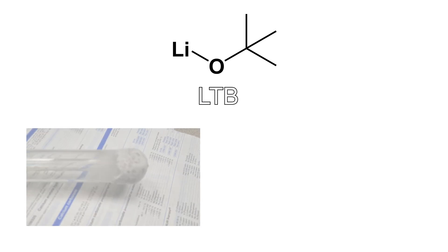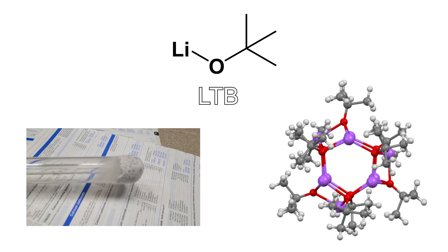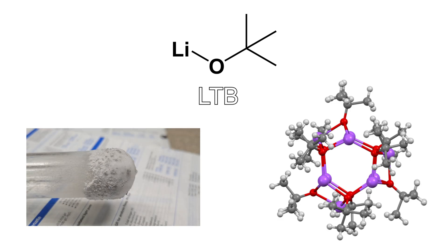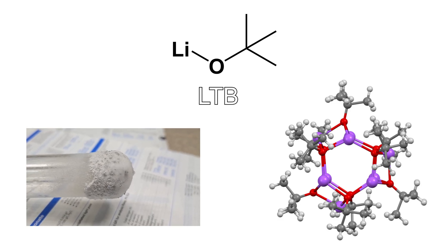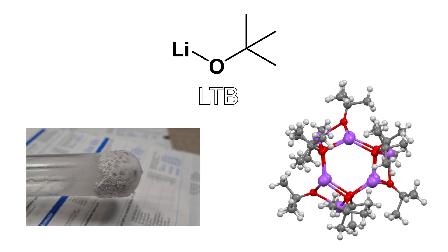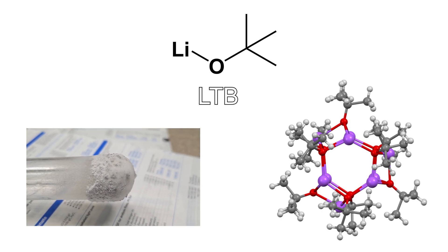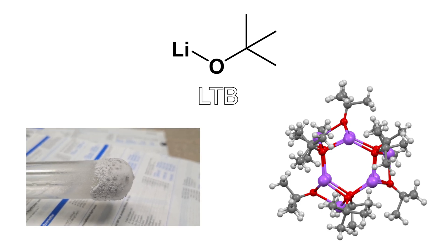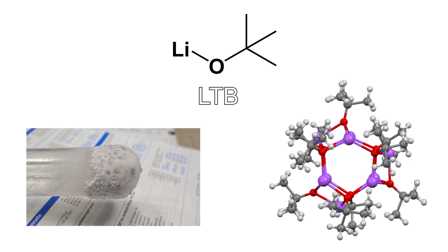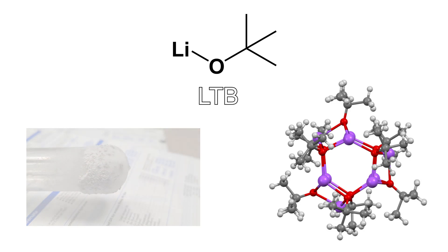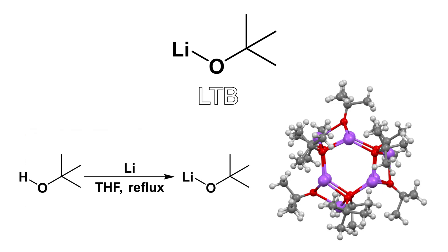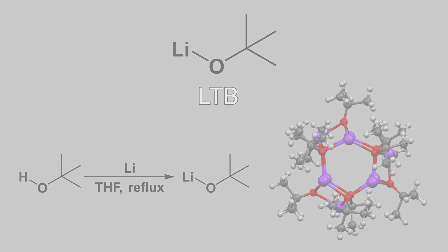It sublimes as a hexamer at about 150 degrees C. Notably, in benzene it's also solvated as a hexamer. This compound is pretty expensive in my opinion — $26 per gram — so I will make it via a templating reaction between lithium metal and tert-butanol in THF. That was a small theoretical part, so now let's go in the fume hood.